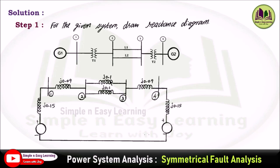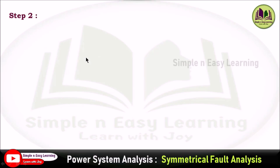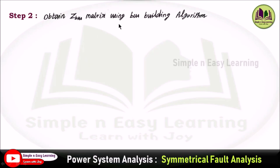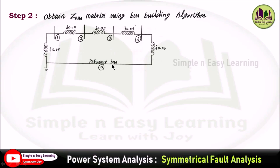Step two: obtain the Z-bus matrix using the bus building algorithm. From the reactance diagram, the two lines connected between bus 2 and bus 3 each have reactance j0.1. Since they are in parallel, the parallel combination gives j0.05. Using this reactance diagram we are going to form the Z-bus matrix.